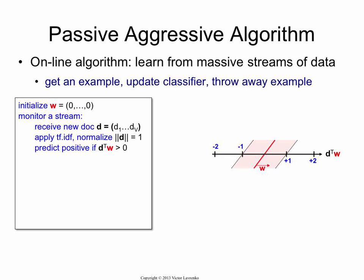And then sometime later, you're going to observe the true class of the document. And that's y, and it's either plus 1 or minus 1. So the document is either positive or negative. So you want to use that true label, you want to use that y, to make your weight vector better.